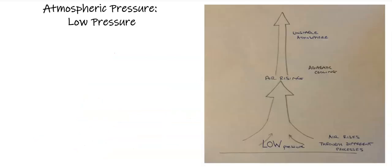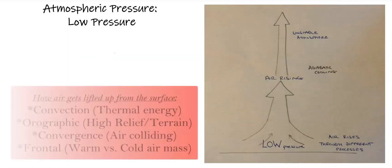So we have our low pressure diagram on the right here. Air is rising through different processes. So the air can be lifted through heat, through orographics, and also through convergence. And the last one can be lifted through frontal.